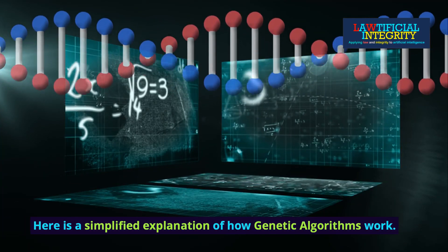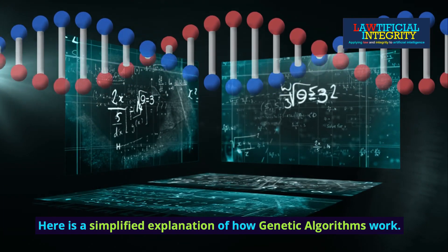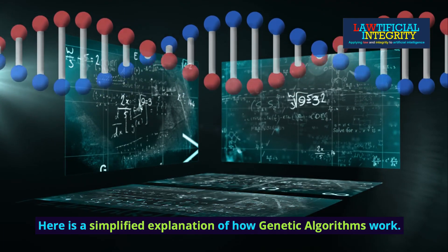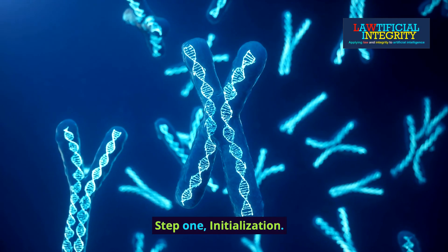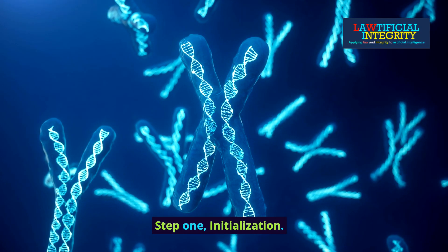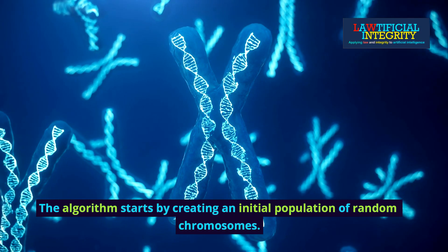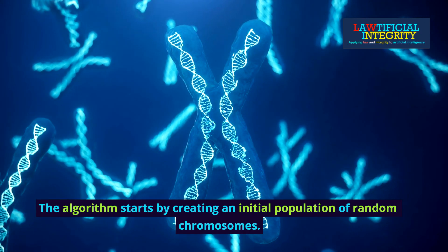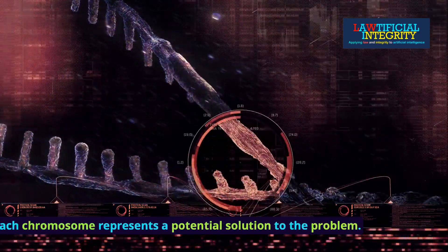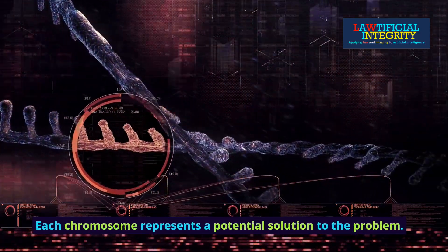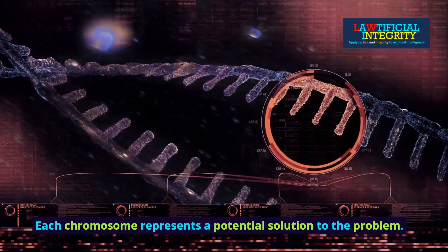Here is a simplified explanation of how genetic algorithms work. Step 1: Initialization. The algorithm starts by creating an initial population of random chromosomes. Each chromosome represents a potential solution to the problem.